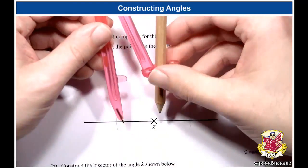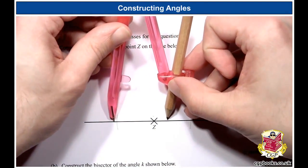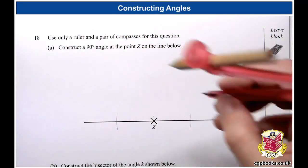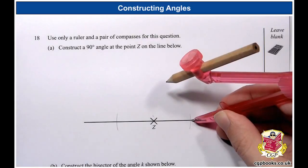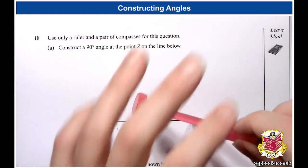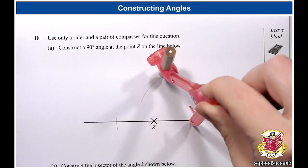Okay, now I'm going to open up the compass so it's a bit bigger this time. So now it's bigger than the distance to Z like that. Then I want to put the point where the arc crosses the line. Here we go. And then I'm going to make another arc above Z just like that.